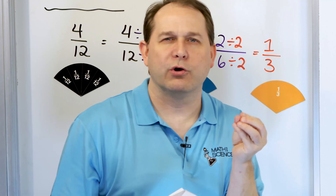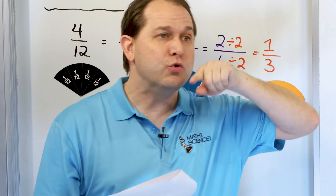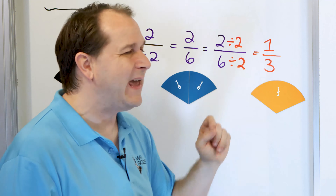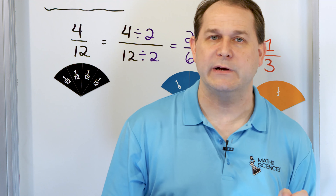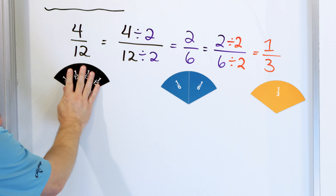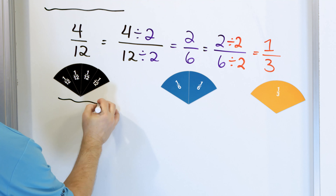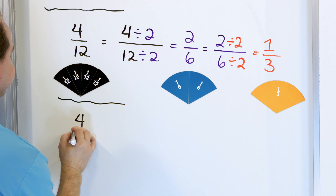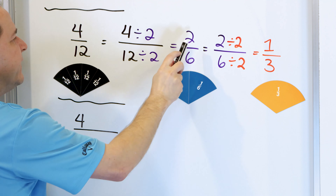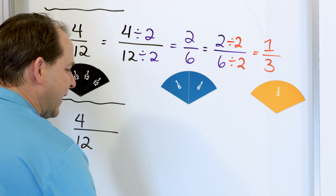When a teacher or a test tells you to simplify a fraction into lowest terms, you want to keep simplifying as much as you need to until you get to a point where you can't do it anymore. Let's do the problem again — four-twelfths. What we did is we divided by two, got an answer, then divided by two again. But notice there's something else that divides into top and bottom. What if I divide by four?